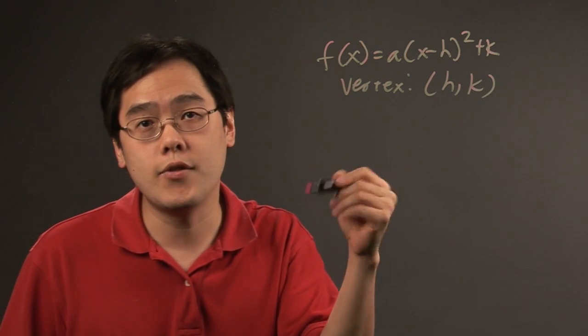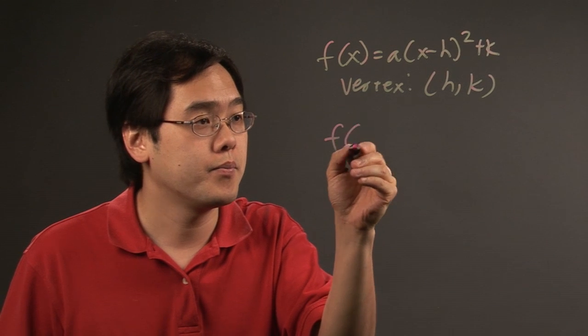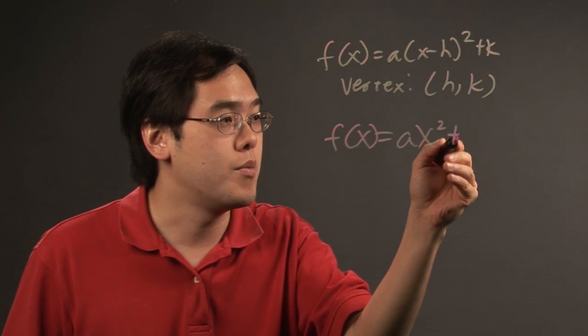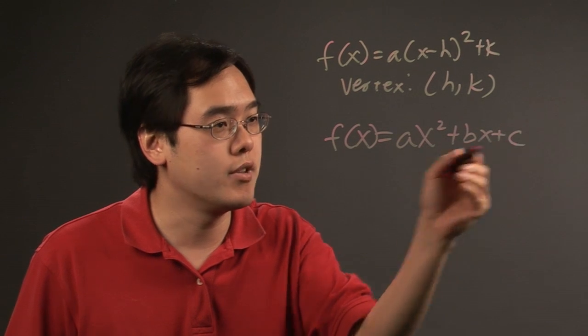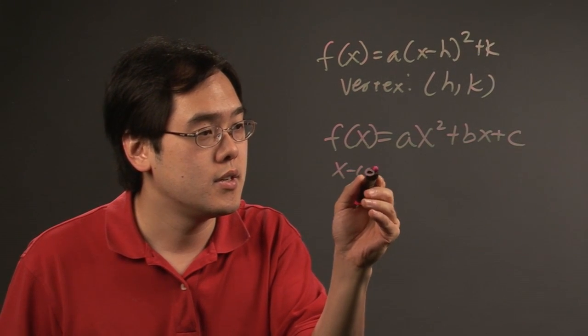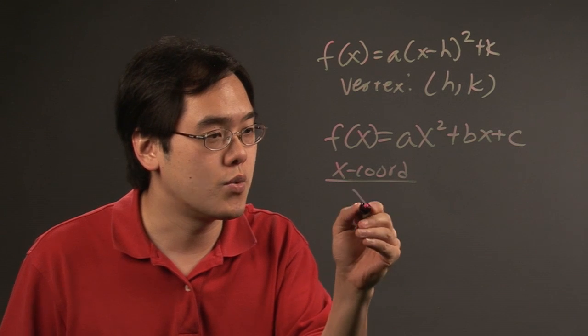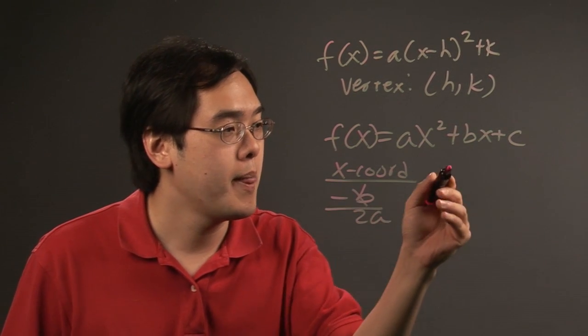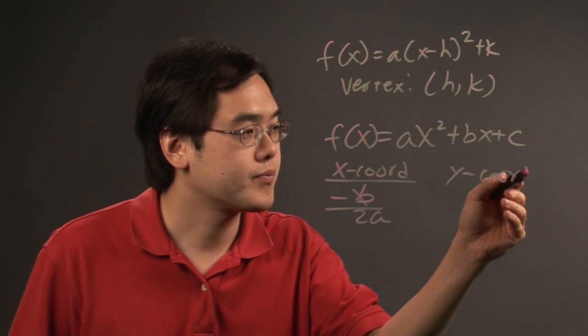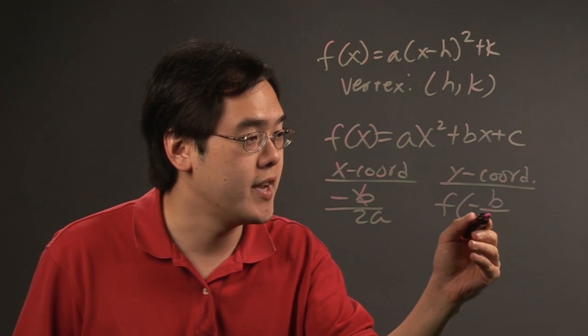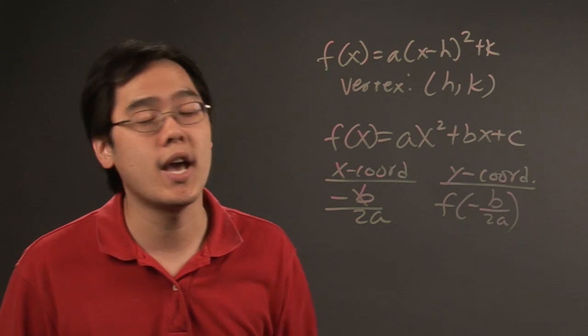Now if you're given the parabola in polynomial form, it's of the form ax²+bx+c. Generally, to find the vertex, the x-coordinate uses the ratio -b/2a, and for the y-coordinate you plug in the x-coordinate, so it's f(-b/2a), and whatever numbers you get gives you the vertex from there.